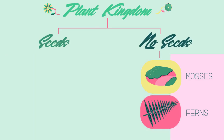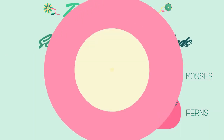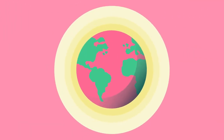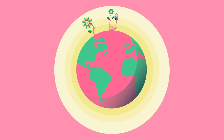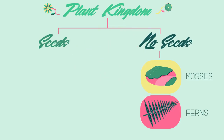The evolution of the seed was a huge evolutionary step for plants. It meant they could grow anywhere on Earth, in any environment. They were no longer limited to extremely moist conditions.